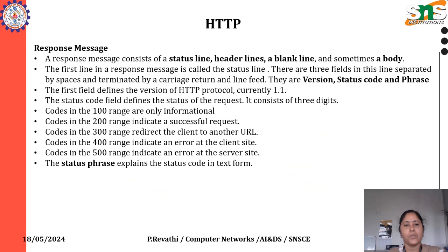A response message consists of a status line, header line, blank line, and sometimes a body. The first line in a response message is called the status line. There are three fields in this line, separated by spaces and terminated by a carriage return and line feed. They are version, status code, and phrase.